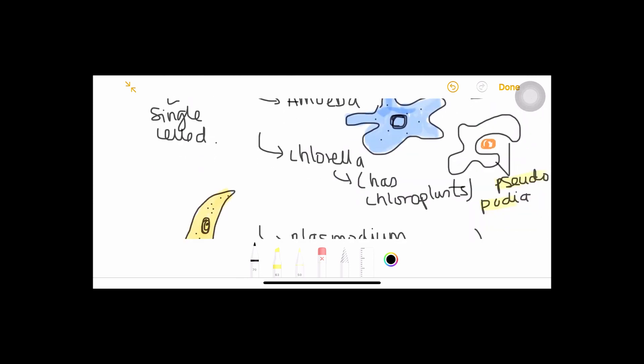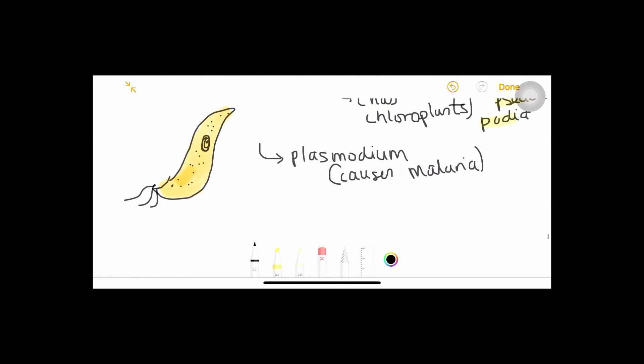Then we have another protoctist, the Chlorella. The Chlorella has chloroplast, that means it has properties like a plant. And the Plasmodium, you must be familiar with it. Plasmodium causes malaria, yes it's a malaria parasite.